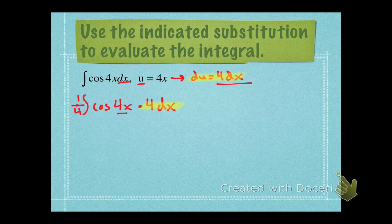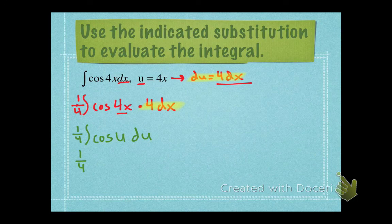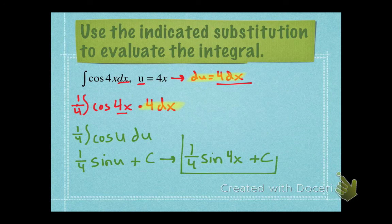Making our substitution: we have 1/4 times the integral of cosine u du. An antiderivative for cosine u is sine u, plus c. The last step is to re-substitute 4x back in for u. If you take the derivative of our final answer — 1/4 times sine 4x plus c — you should get the integrand we started with, cosine 4x, and you will.